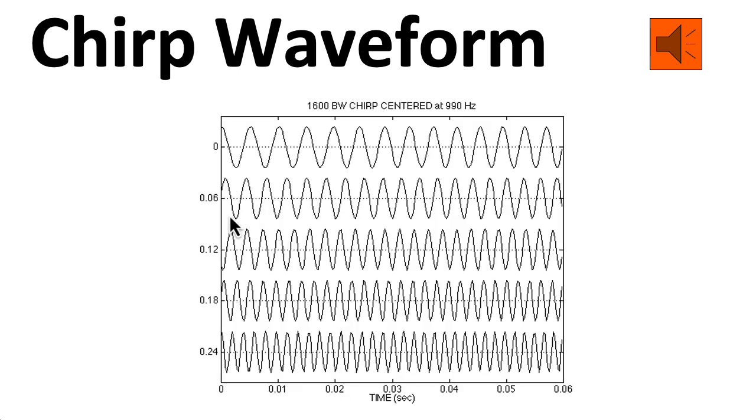Here's a small portion of a time domain plot of that signal. Notice that if you look at any individual local portion, it looks like a sinusoid of a fixed frequency. It's only when you look at a larger portion of the waveform that you see the frequency variation clearly.